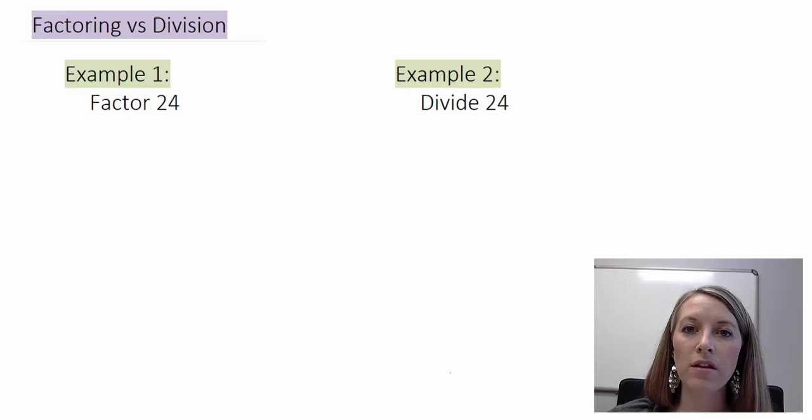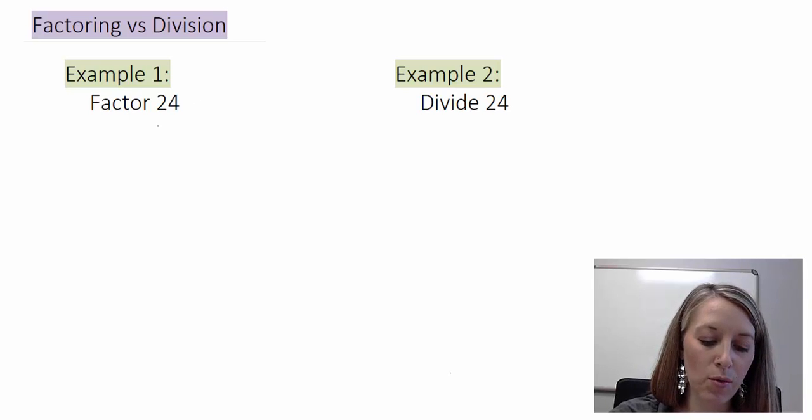When we talked about the factoring section, clear back in Chapter R, I introduced this to you here. I said, what's the difference between an example saying factor 24 and an example saying divide 24? Well, we learned that when we said factor 24, you get to make your own choice. What did you want to factor it by? You could have chose to write it as 4 times 6, or as 3 times 8, or as 2 times 12.